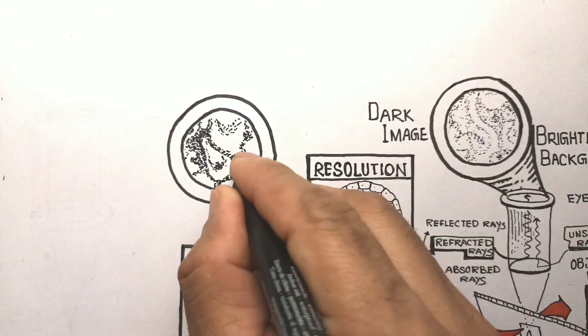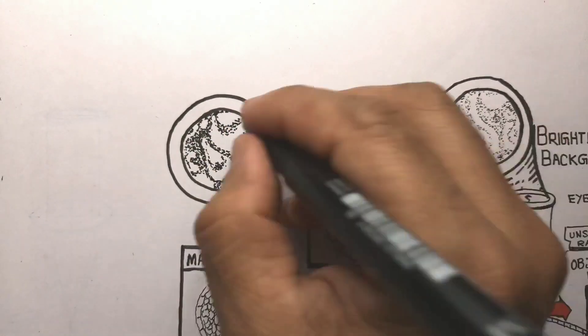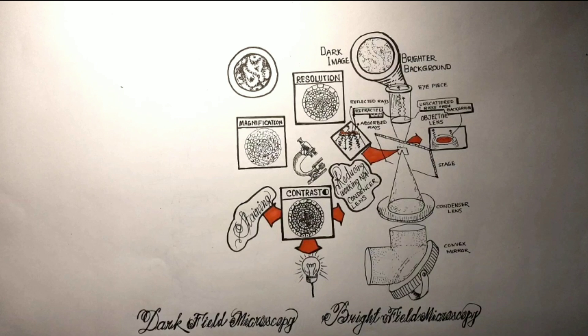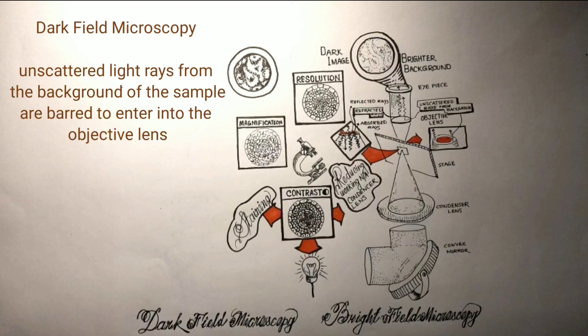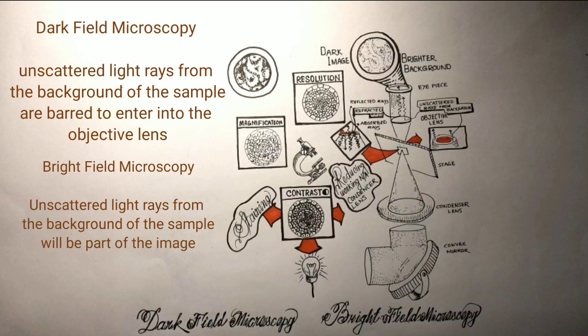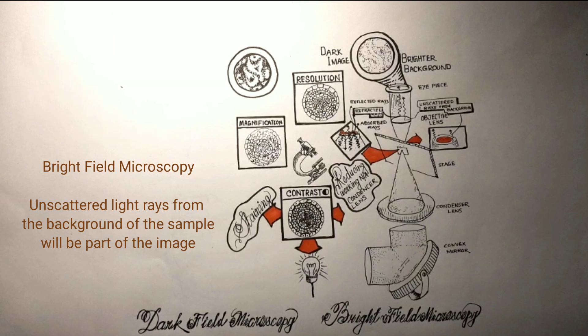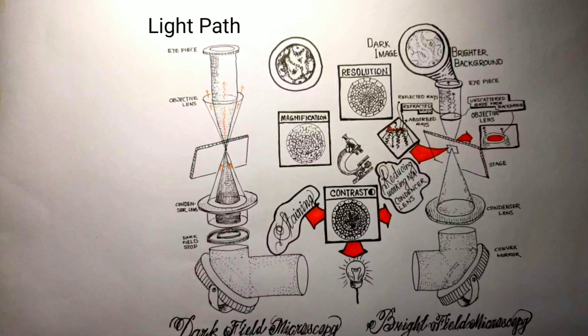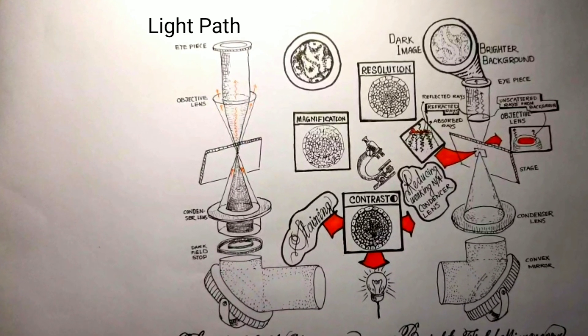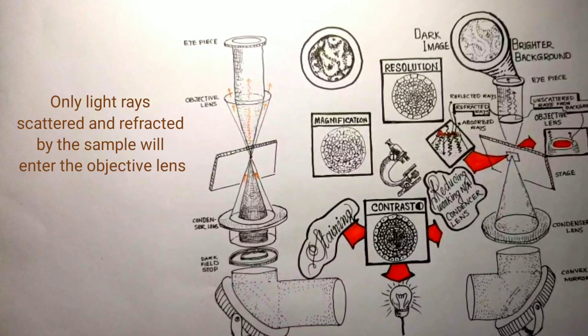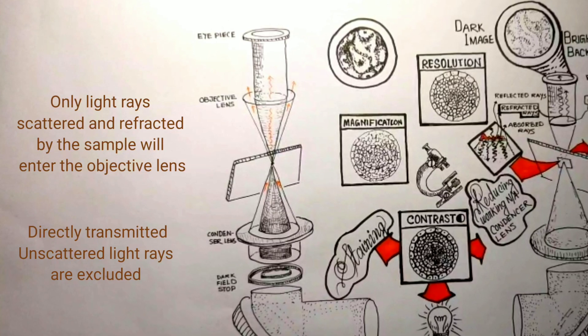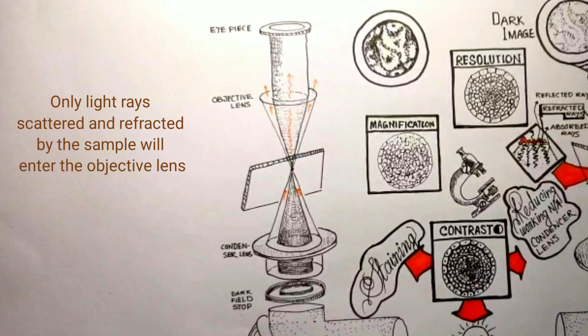In dark field microscopy, the primary goal is to enhance contrast. Measures are taken to exclude unscattered and undeviated light from the background from entering the objective lens. Dark field microscopy produces an almost black background with bright objects, essentially the complete opposite of bright field illumination. Let's see the light path followed in dark field microscopy to understand how unscattered light is excluded, and only light scattered by the sample forms the final image.